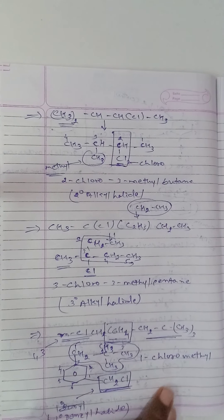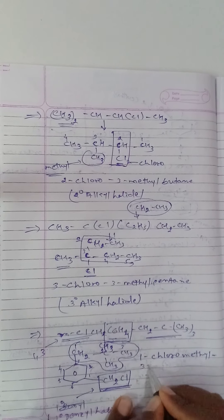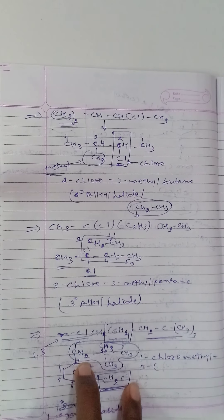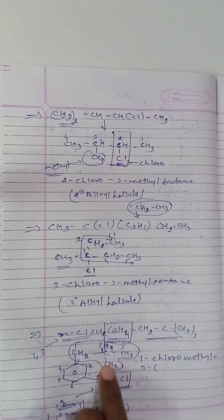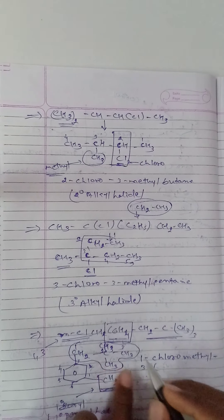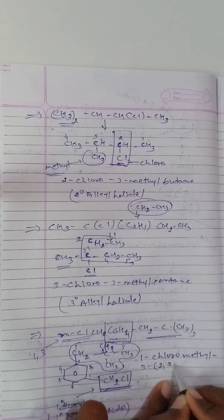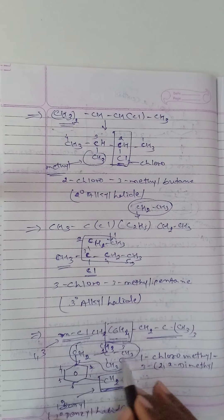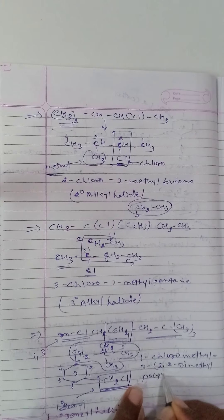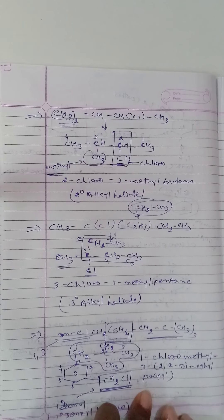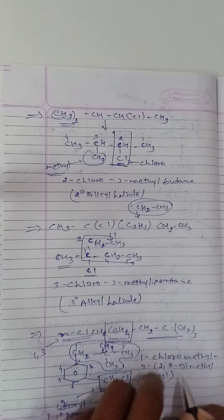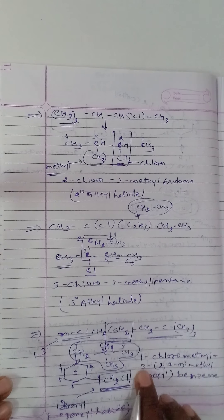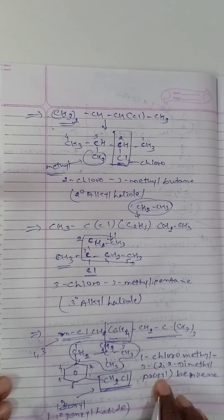For the meta-chloro compound: on the third position, on the second carbon there are two methyl groups — so 2,2-dimethyl. For a three-carbon linkage, it is called propyl. Bracket is over, and the rest of the structure is benzene. IUPAC name: (3-chloromethyl-2,2-dimethylpropyl)benzene or 1-chloromethyl-3-(2,2-dimethylpropyl)benzene.